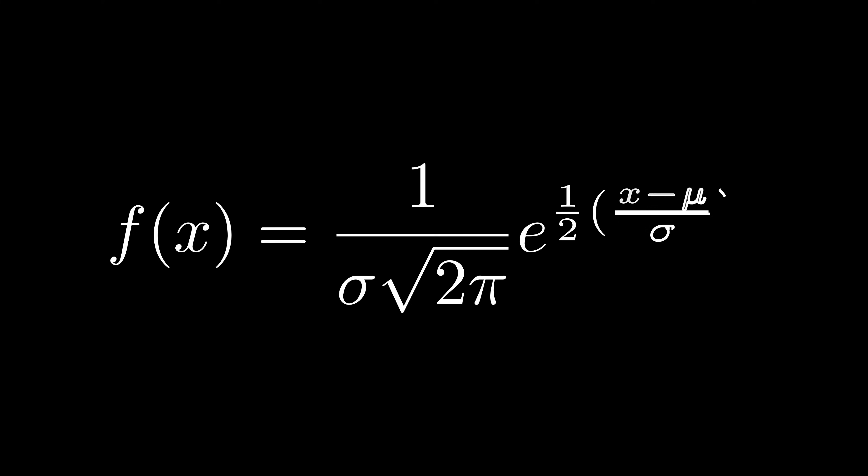Let's take a look at one more function example, the normal distribution. As you can see, there are our two constants, pi and Euler's number e. We saw those earlier. Mu and sigma are the mean and standard deviation, respectively.